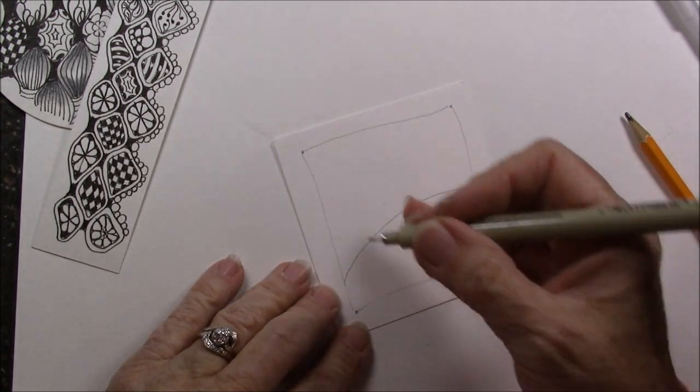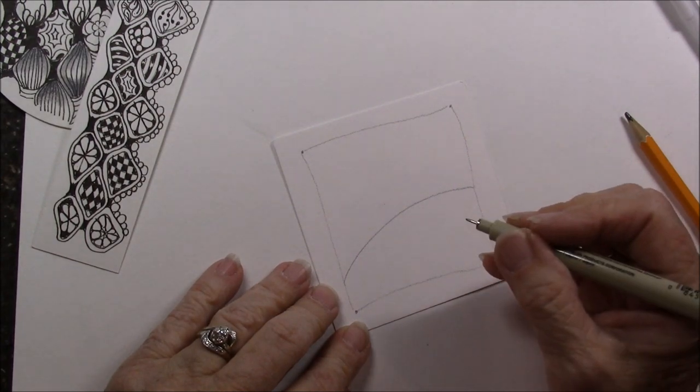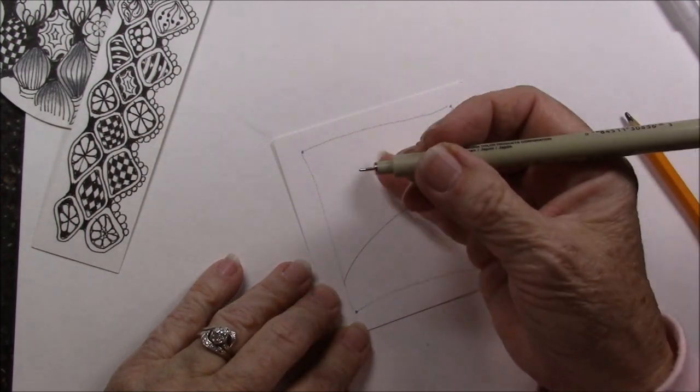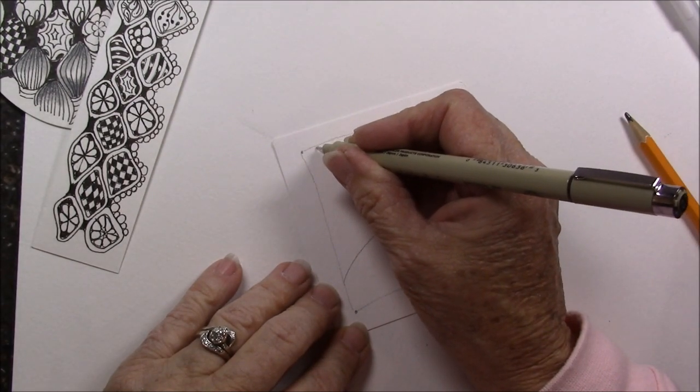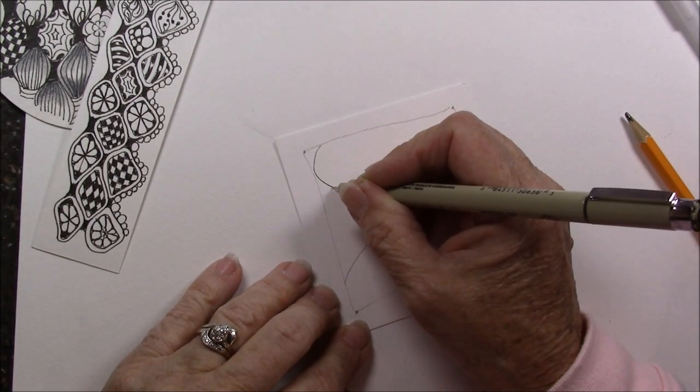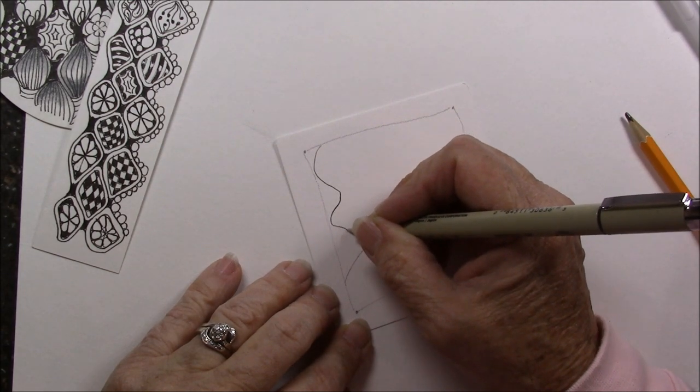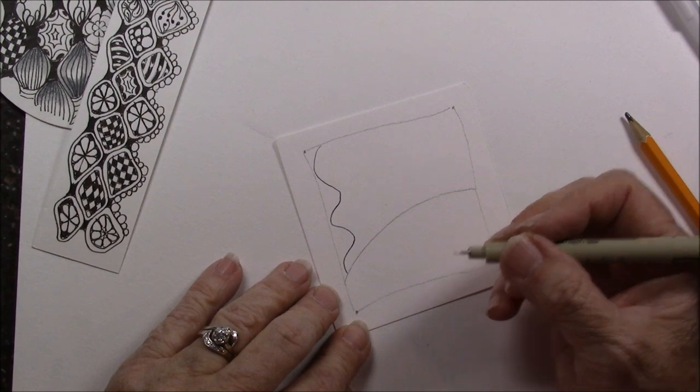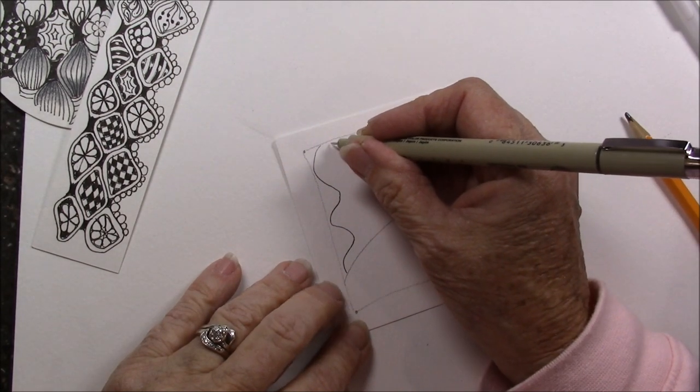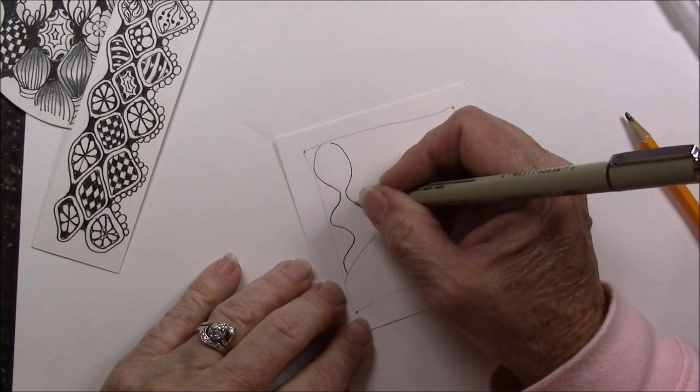Now we're going to do the step-outs in Glace. There are a couple of ways. We're just going to start with a wavy line, kind of a snake line going down my tile.